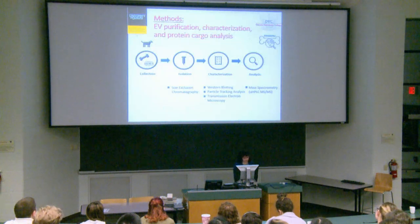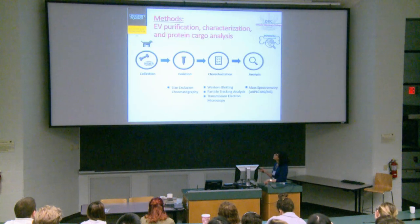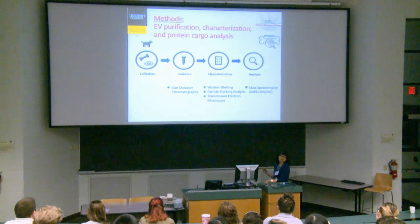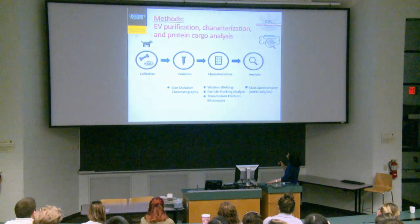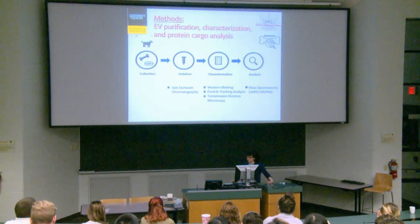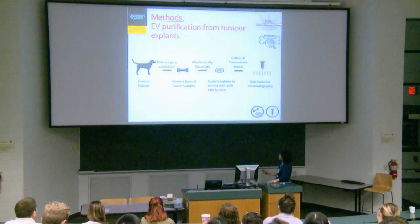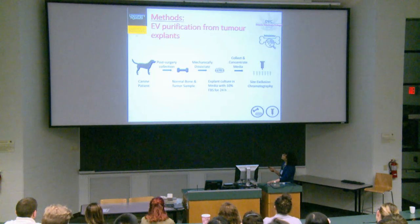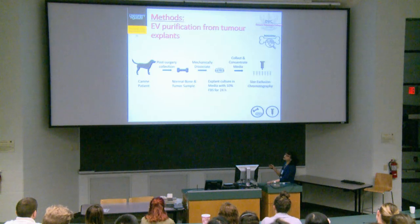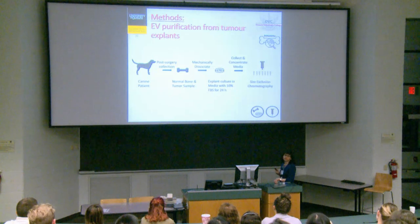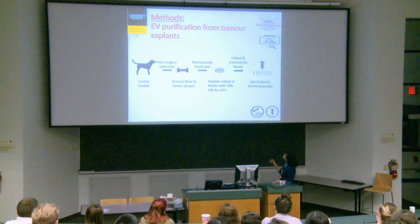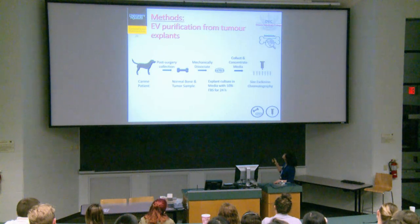The methods are relatively straightforward: we collect samples from a canine patient going into surgery, following amputation collecting normal bone and tumor samples. We mechanically dissociate the tissue, culture it in EV-depleted serum for 24 hours, then concentrate the media and separate by size exclusion chromatography to obtain multiple fractions. We then analyze these fractions to identify markers of vesicles — specifically flotillin-1 and CD63, which have worked well in dog lysates in our hands.